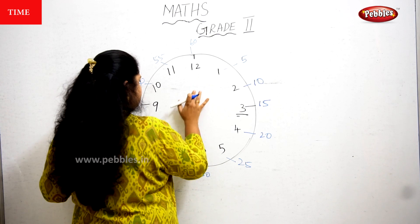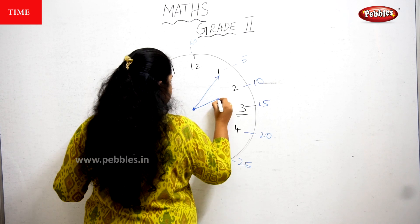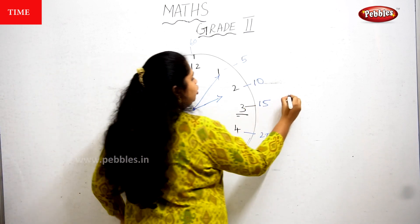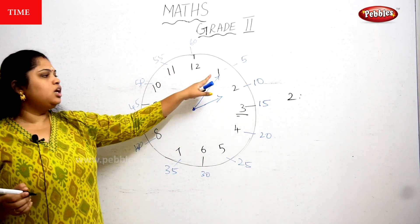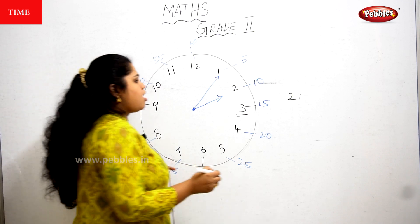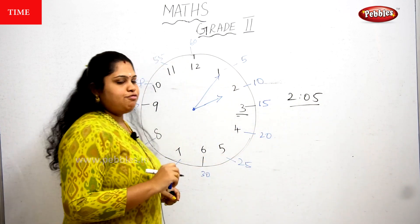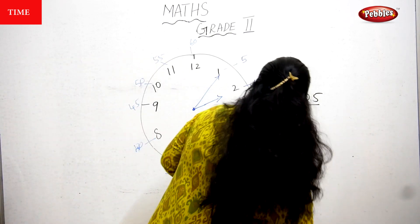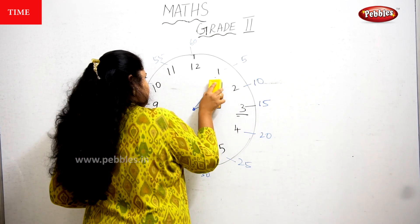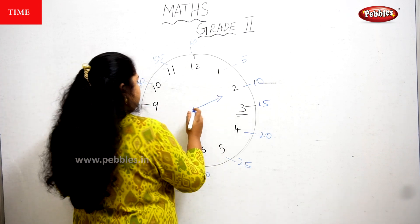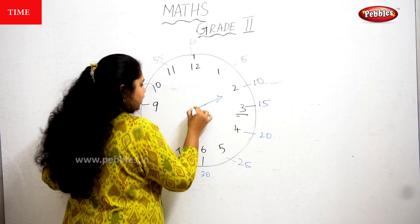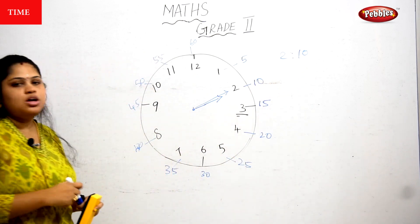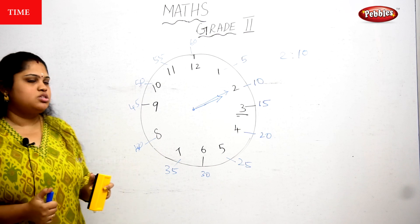Now I'm changing the big needle to 1 and the small needle to 2. What's the time? The small needle is at 2, and the big needle is at 1 — instead of saying 1, you say 5. So the time is 2:05. Now I'm moving the big needle to 2, keeping the small needle at 2. The time is now 2:10.